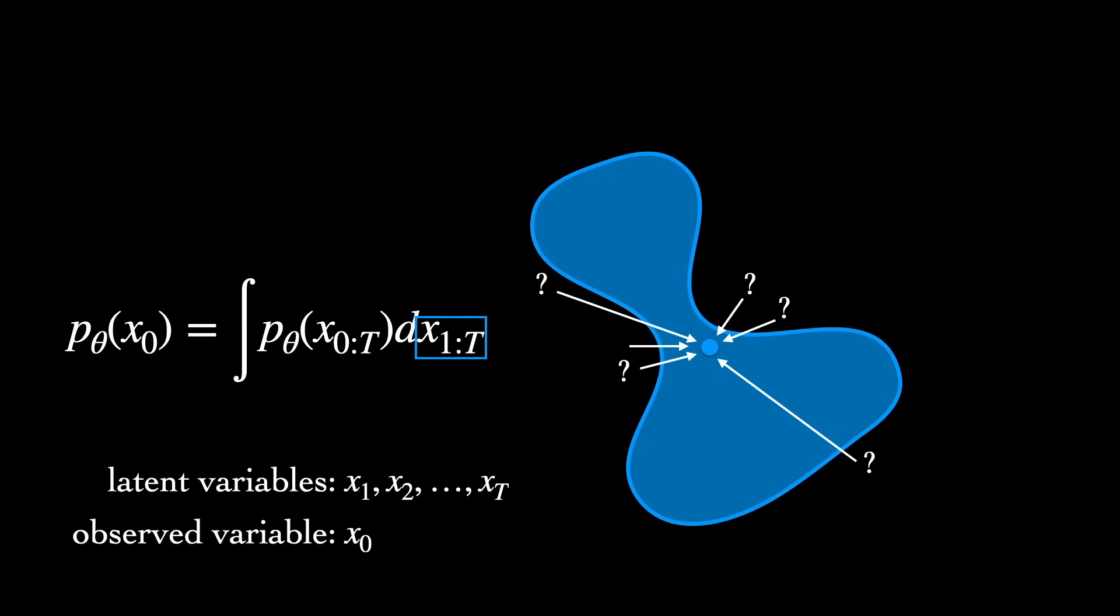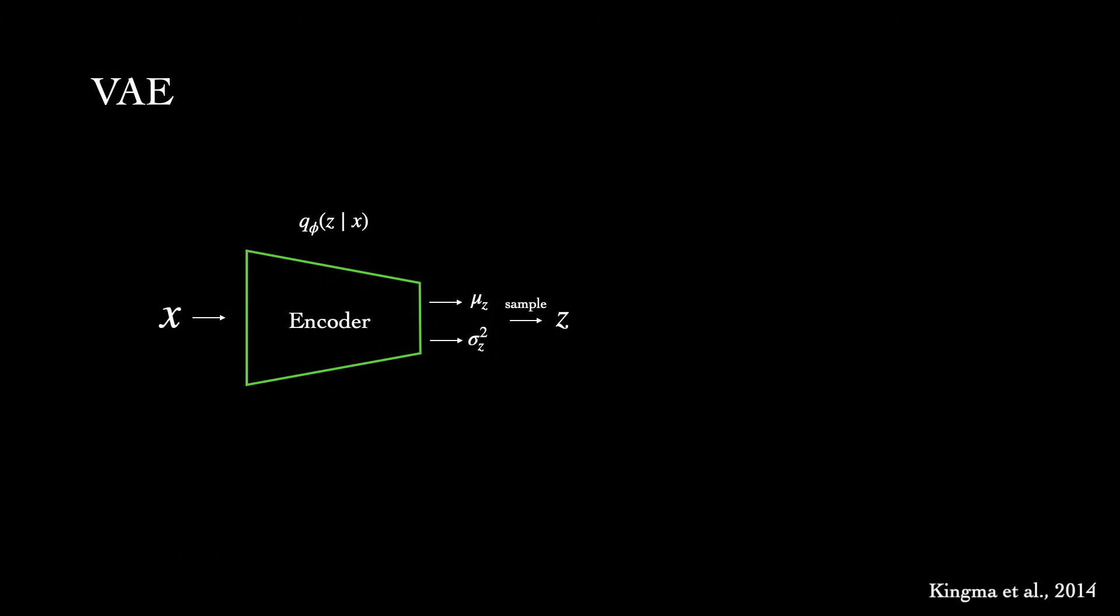If we think back to another latent variable model you may be familiar with, variational autoencoders, commonly known as VAEs, we might get a hint about our training objective. As a quick reminder, in a VAE, we have an encoder that produces a distribution over latency, given a latent input z, given a data input x, and a decoder that reconstructs the data by producing a distribution over data x, given a latent input z.